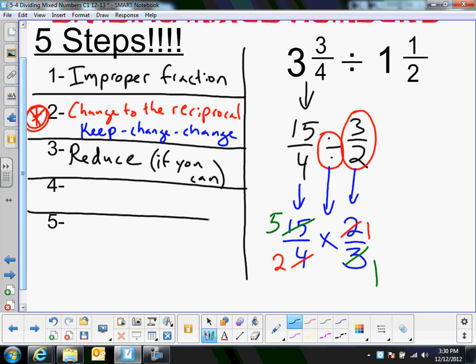Step 4, multiply straight across. At this point, it's set up as a multiplication problem. Once you change it to a multiplication problem in the second step, then you just follow the steps of multiplying. You reduce, you multiply, and 5 times 1 is 5, and 2 times 1 is 2. And then the final step, just like in multiplying, is simplify.